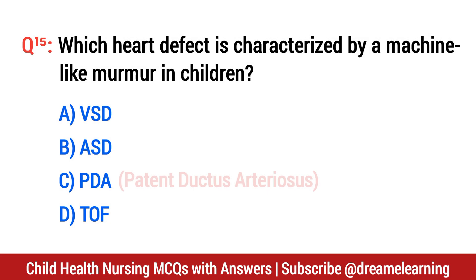Question number 15. Which heart defect is characterized by a machine-like murmur in children? The right option is C: PDA (Patent Ductus Arteriosus).